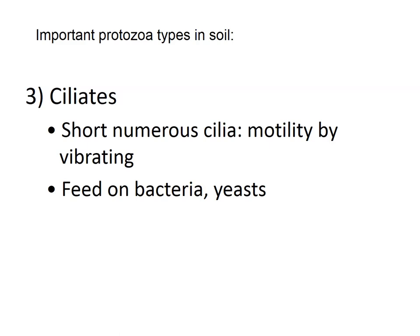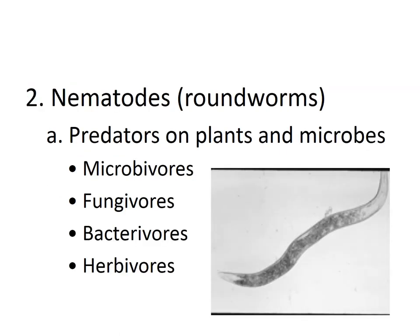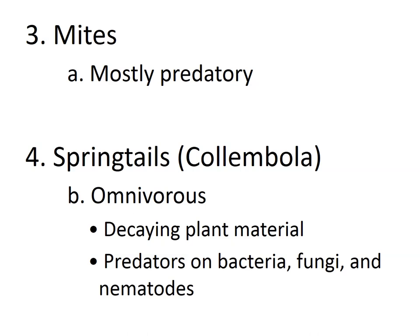The second group is nematodes, known as round worms. They can be predators on plants or microbes. If they eat microorganisms they are called microbivores; if they eat fungi, fungivores; if they eat bacteria, bacterivores; and if they eat plants, herbivores. Their classification depends on feeding behavior.